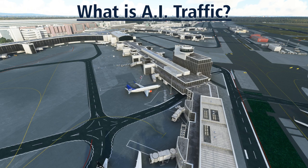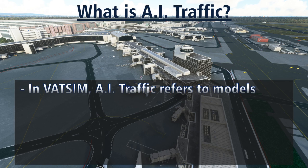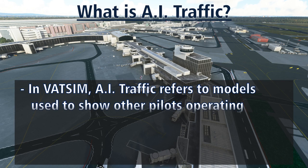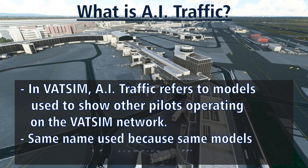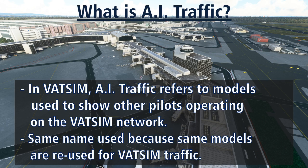However, the name artificial intelligence traffic or AI traffic stuck at that point. In the VATSIM world, AI traffic has a little bit of a different connotation. In VATSIM, AI traffic refers to the models used by a user's VATSIM client to show other VATSIM airplanes in a user's simulator. Since the same models are used for displaying VATSIM traffic as were used for these original scripted AI traffic models, the name AI traffic continues to be used when referring to these models that show other people's airplanes in your simulator.